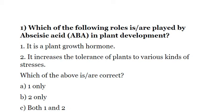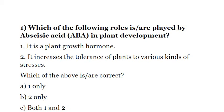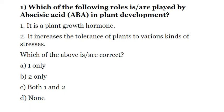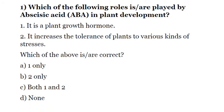Today is the fifth lecture about science and technology, which includes questions from science as well as science and tech. First question: which of the following roles is played by abscisic acid in plant development? One, it is a plant growth hormone. Two, it increases the tolerance of plants to various kinds of stresses. Both statements are correct, so the solution is C — both 1 and 2.